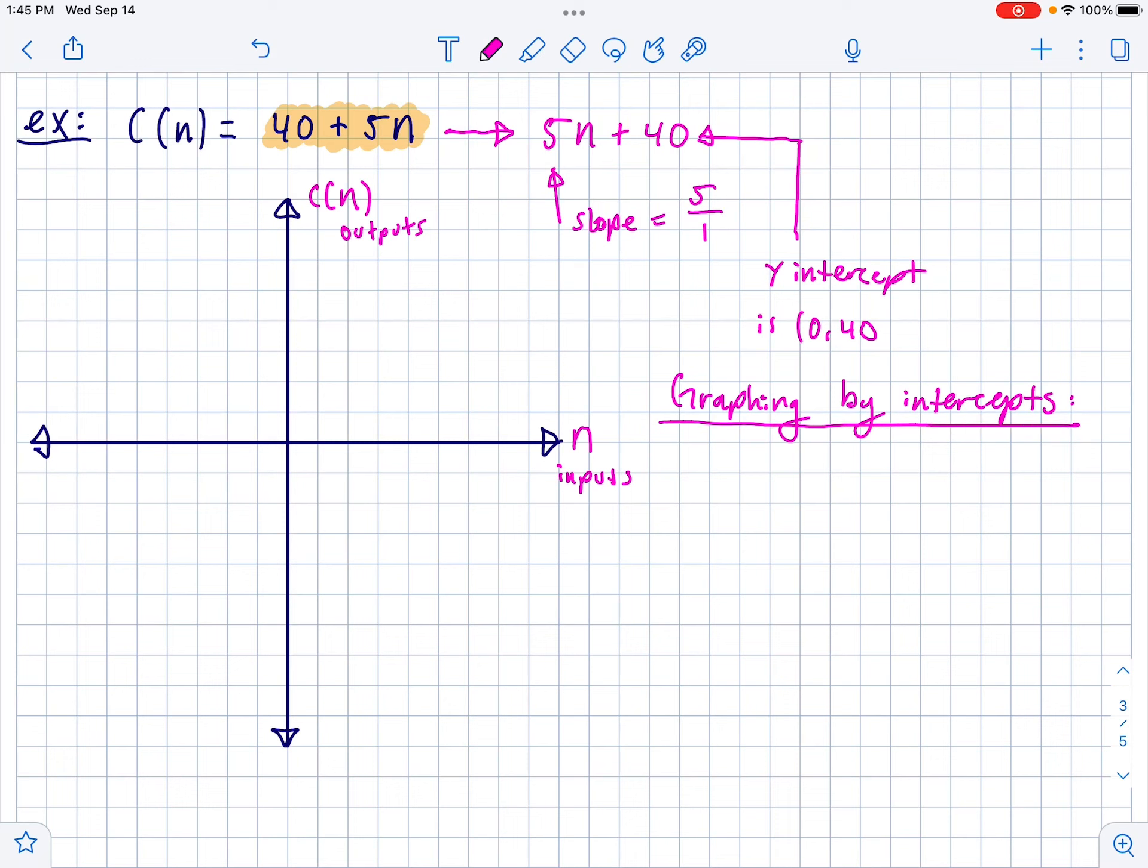And the way you do this is you find the x and the y-intercepts, and then you just plot those and connect them with a line. Now, to find the y-intercept, all you have to do is make the x 0, or the n in this case. So to find, I didn't show you c's of n's? Yeah, I guess I could. So to find the y-intercept, we'll do c of 0 equals 5 times 0 plus 40. So c of 0 is equal to 40. That means that 0 comma 40 is the y-intercept. A little box around it.